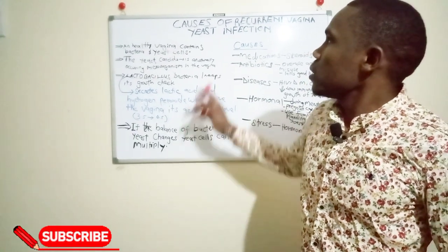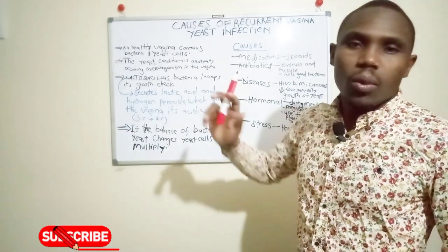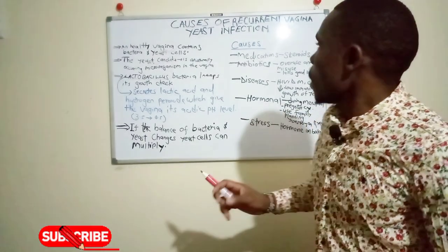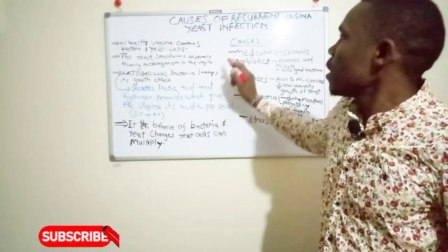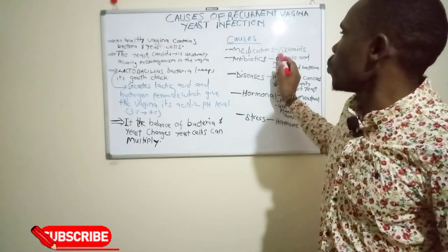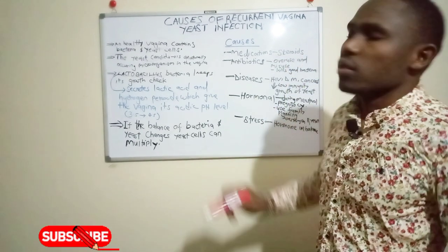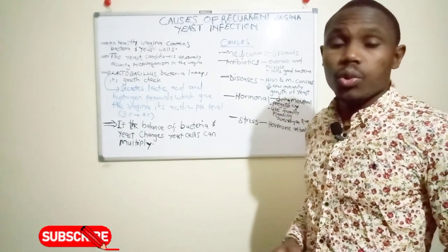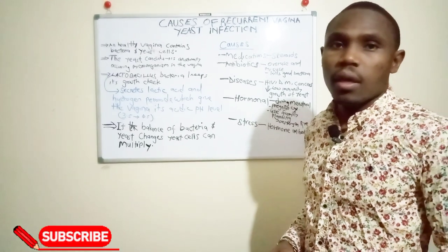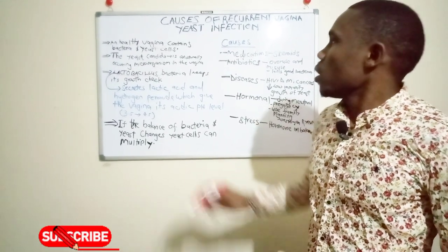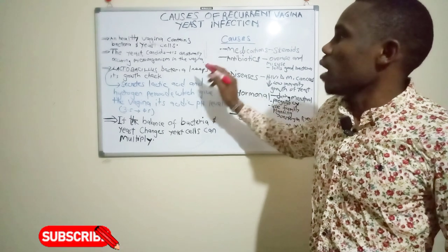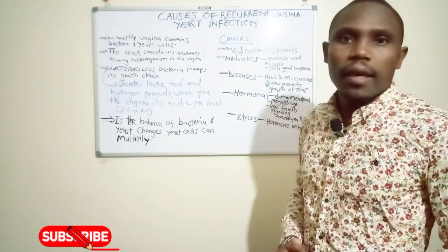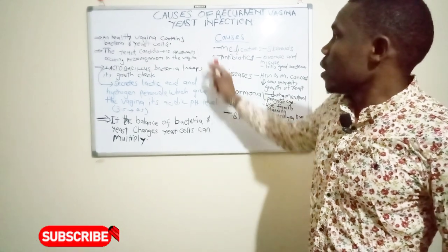What makes it more recurrent? One cause is medications. Some medications that we take, such as steroids — maybe you've been on medications due to transplants — are going to lower the immunity. And if the immunity is low, these yeast cells are going to grow. So one cause is medications.